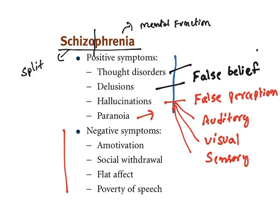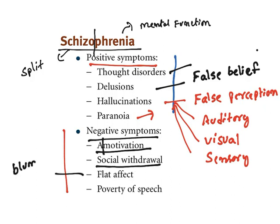Negative symptoms of schizophrenia include: amotivation — lack of motivation; social withdrawal; flat affect, also known as blunted affect, where they don't respond to anything — you crack a joke and they don't even laugh or respond; and poverty of speech — they cannot speak properly.